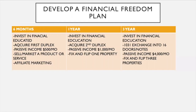Focusing on the six-month column, these are the action steps you're going to take and the results that will be generated. As you invest in your financial education, you learn how to acquire your first duplex using creative financing that generates a passive income of $500 a month. You also learn to sell and market your own products and services, or become an affiliate for a company or product you enjoy, and you learn the skill set of sales — the root and foundation of every business.